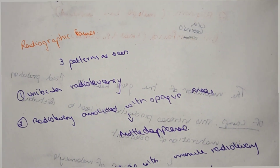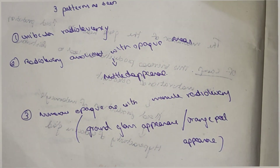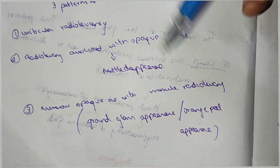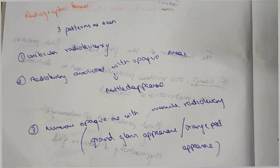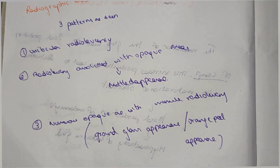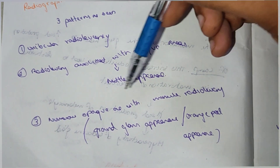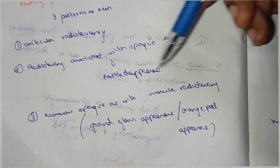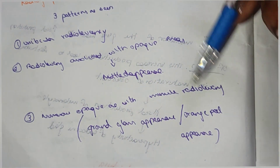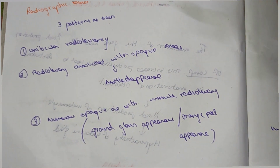Radiographic features show three patterns. First is unilocular radiolucency — a single round locule. Second is radiolucency associated with opaque areas giving a malted appearance. Third is ground glass appearance, also called orange peel appearance. These are important one-word answer questions.